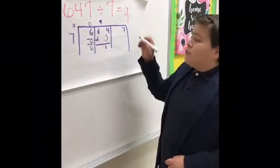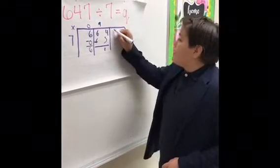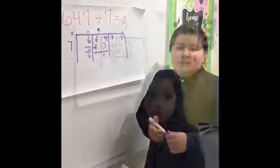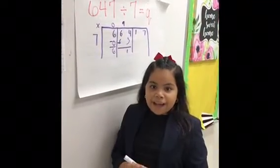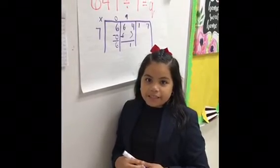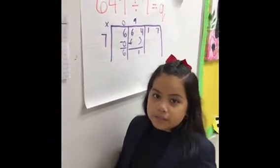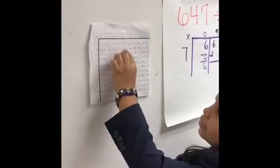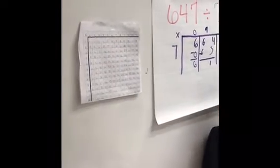One is the difference. So, the one, we move it to the next box. And your number is 17. We repeat the steps. How many groups of 7 can we make with 17? We look at the multiplication chart. We see that 7 times 2 is 14.